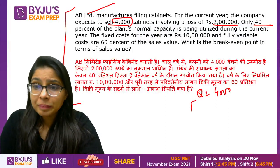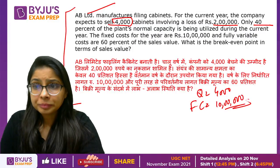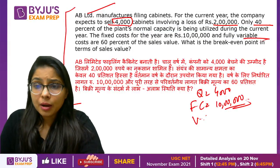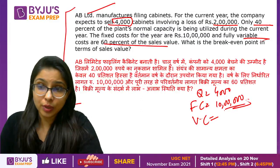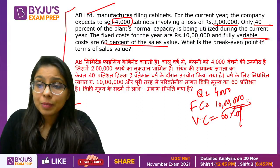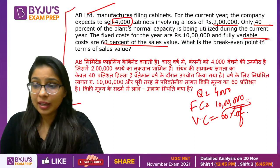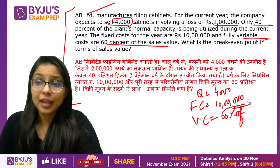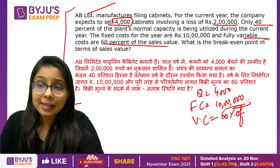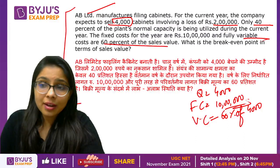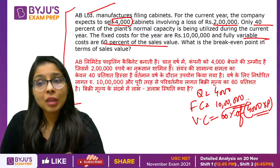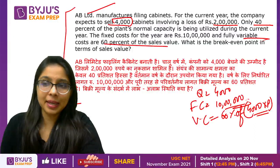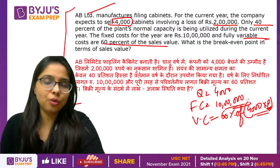You have fixed cost given here — 10 lakh rupees. For variable cost, you can see that the variable cost is 60% of the sales value. Now, 60% of the sales value — how much? We know that 60% of the price applies to 4,000 units, but we don't know the price. So, what is our first job? We need to calculate this price P.